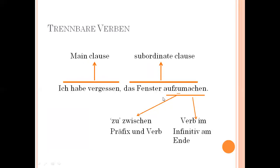Now let's see an example with a trennbares Verb — a separable verb. The example is: 'Ich habe vergessen das Fenster aufzumachen' — I forgot to open the window. Here, 'Ich habe vergessen' is the main clause. 'Aufzumachen' is the verb at the end of the subordinate clause in infinitive form. 'Zu' is placed between the prefix and the verb.